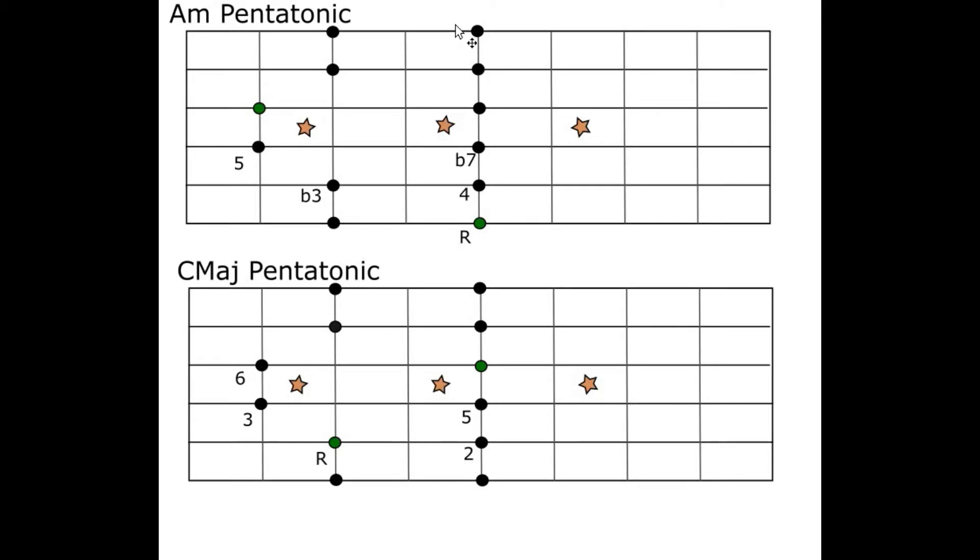And next we'll look at going from C major pentatonic into C major scale in the same way by adding the missing tones which you should know by now are the fourth and the seventh.